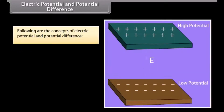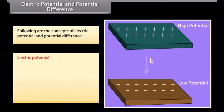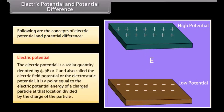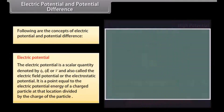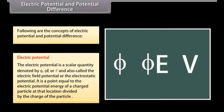Electric potential is a scalar quantity denoted by E or V. It is a value equal to the electric potential energy of a charged particle at the location divided by the charge of the particle.